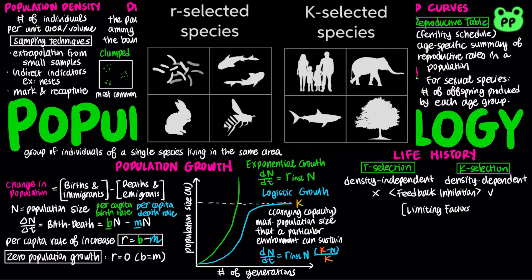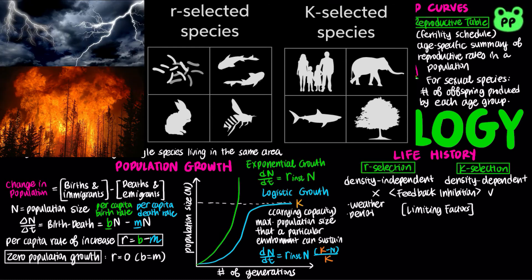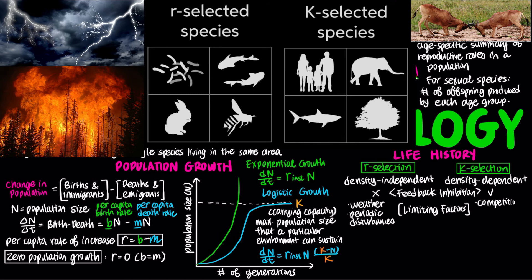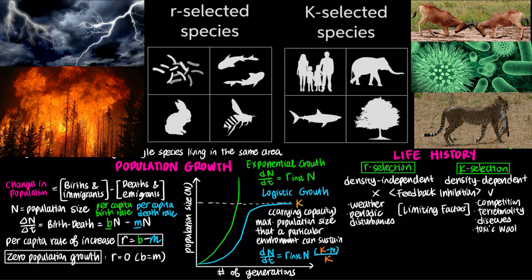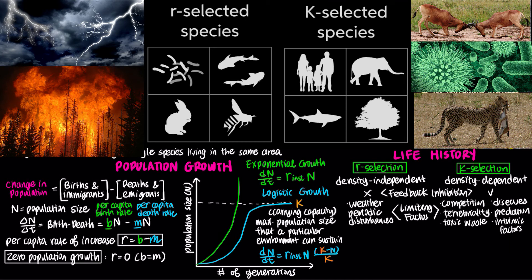Density-independent selection is mainly affected by weather and periodic disturbances, whereas density-dependent selection may be affected by competition for resources, territoriality, disease, predation, toxic waste, and intrinsic factors — including hormonal changes that delay sexual maturation and depress the immune system when population density is high. In crowded populations, increasing population density intensifies competition for resources and results in a lower birth rate.